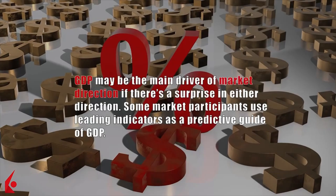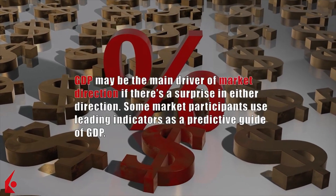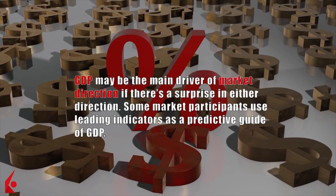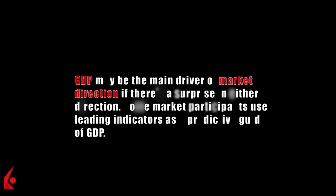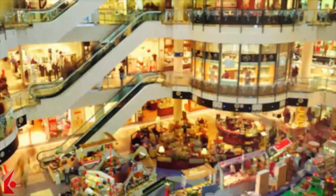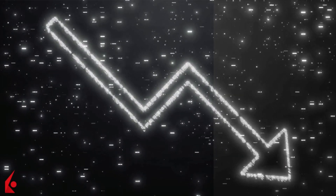GDP may be the main driver of market direction if there's a surprise in either direction. Some market participants use leading indicators as a predictive guide of GDP. GDP is a barometer for opportunity and prosperity — monitoring changes in the economy and analyzing the acceleration, deceleration, or reversal of GDP is important when making investment selections globally. Fast economic growth will likely lead to fast financial asset growth; financial asset values won't sustainably grow if GDP is declining.